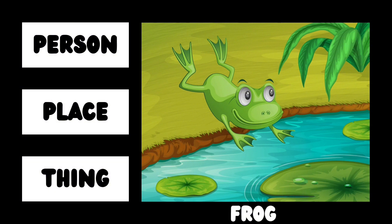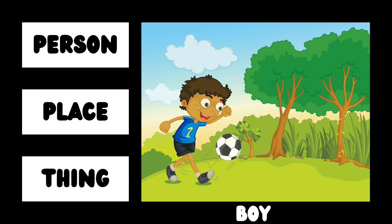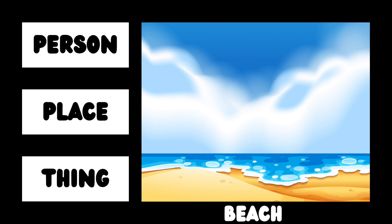Frog — frog is an animal; it lives on water and on land too. Cave — cave is a place inside mountains or land. A boy — boy is a person. These all — persons, places, or things — are nouns. Fish — fish is a living animal. Beach — beach is considered a place.